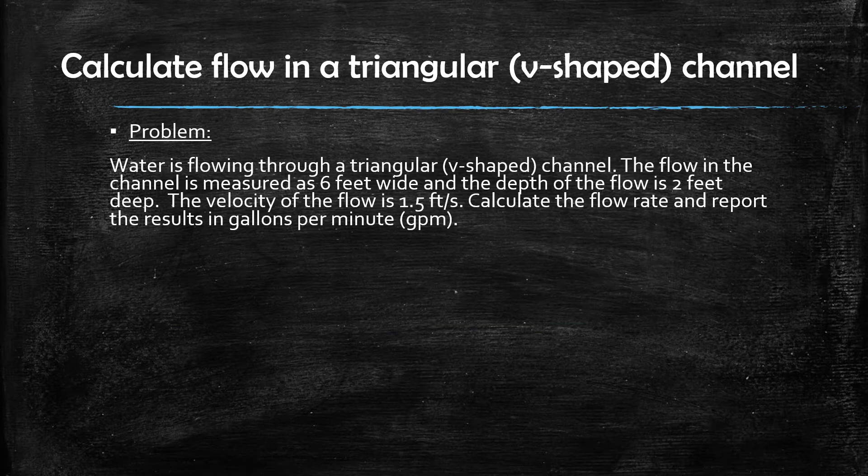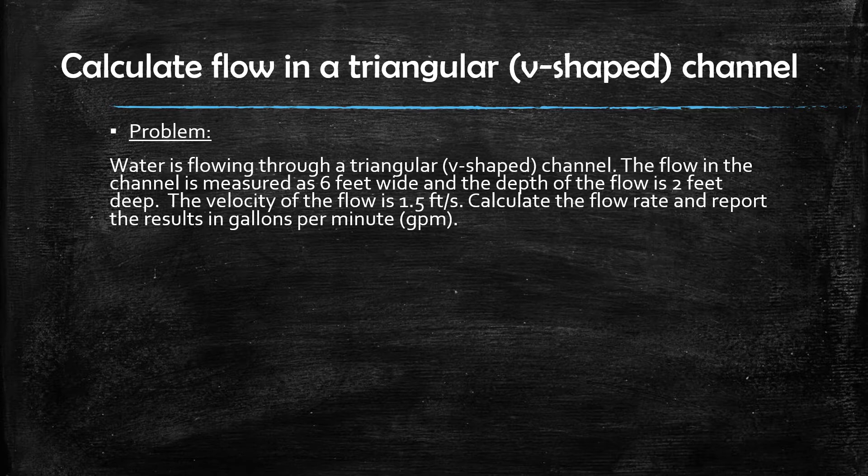The question reads, water is flowing through a triangular or V-shaped channel. The flow in the channel is measured as 6 feet wide and the depth of the flow is 2 feet deep. The velocity of the flow is 1.5 feet per second. Calculate the flow rate and report the results in gallons per minute.